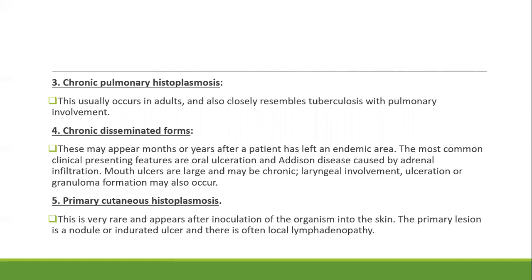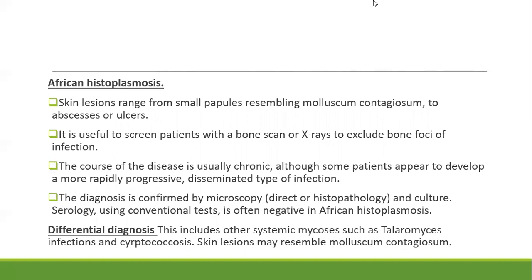Mouth ulcers are large and may be chronic; there is laryngeal involvement with ulceration or granuloma formation. The primary cutaneous histoplasmosis is the rare variety, appearing after inoculation of the organism into the skin — the primary lesion is a nodule or indurated ulcer with local lymphadenopathy. In African histoplasmosis, the skin lesions range from small papules resembling molluscum contagiosum to large abscesses or ulcers. It is useful to screen patients with a bone scan or X-ray to exclude bone foci; the course of disease is usually chronic.